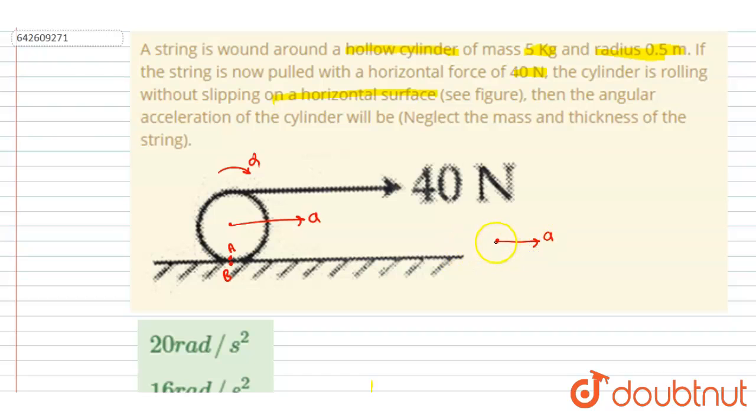And because of the rotational motion, it will gain an alpha*r acceleration in this direction. So the acceleration of point A will be a minus alpha*r, and that will be equals to acceleration of B, which is zero.